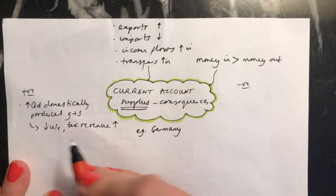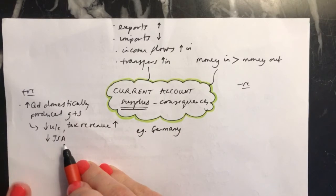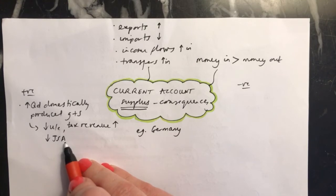Also, because fewer people are unemployed, you'll have a decrease in job seekers allowance or unemployment benefit being paid to people. Therefore, the government will have more money that they can spend in other areas like health care or education.